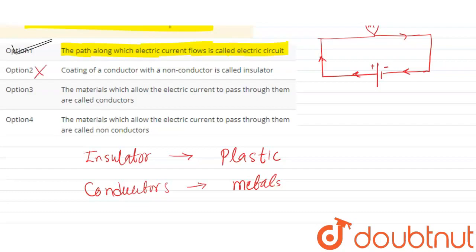The materials which allow electric current to pass through them are conductors, not insulators. These materials allow electricity to flow easily. This current statement is correct here. The option is correct.